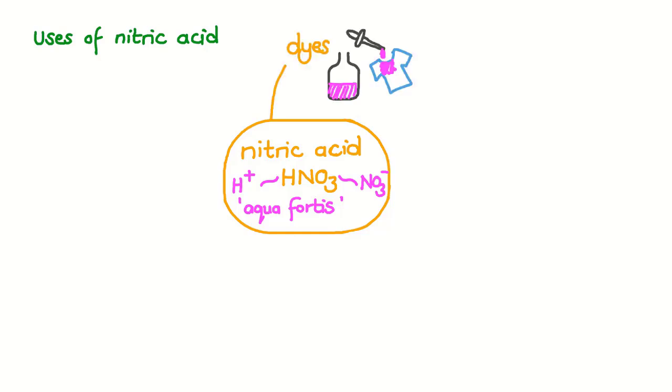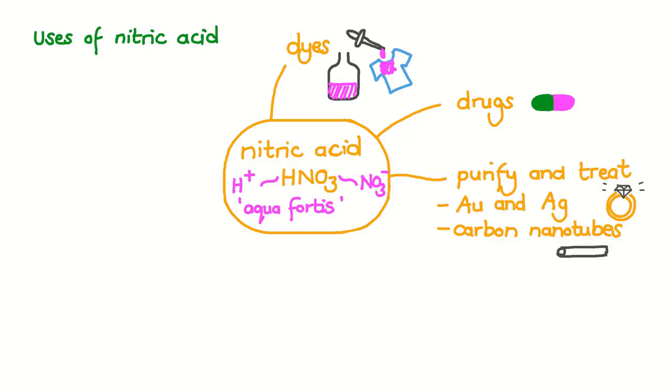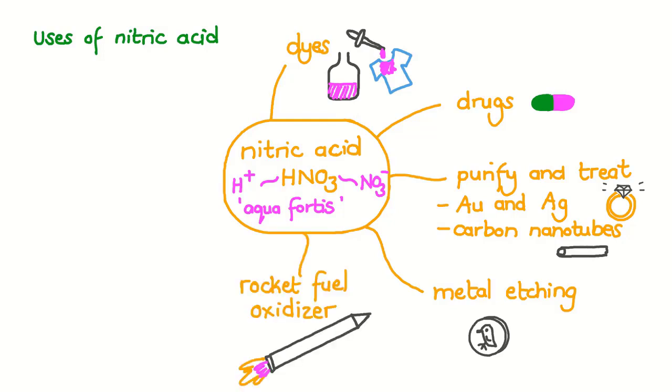It is used in the production of dyes which we use to change the color of fabrics, in the production of drugs and medicines, to purify and treat gold and silver as well as carbon nanotubes, to etch metal surfaces, which is the treatment of certain parts of a metal surface with a strong acid to create a design. As an oxidizing agent in rocket fuel, nitric acid is used as a reagent in elemental analysis in the laboratory. Elemental analysis is when a scientist determines which elements are present in a sample and in what quantities they are present.